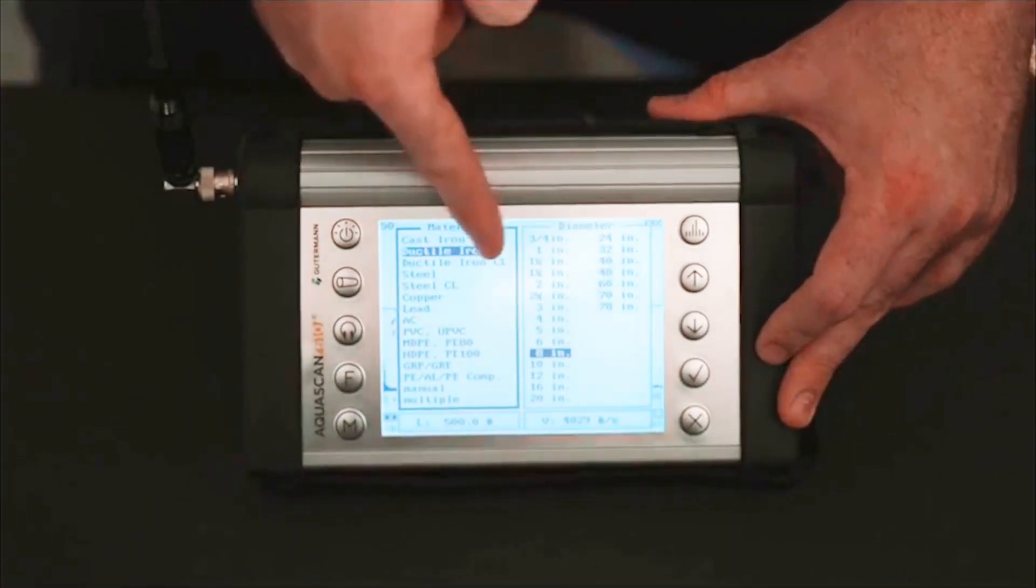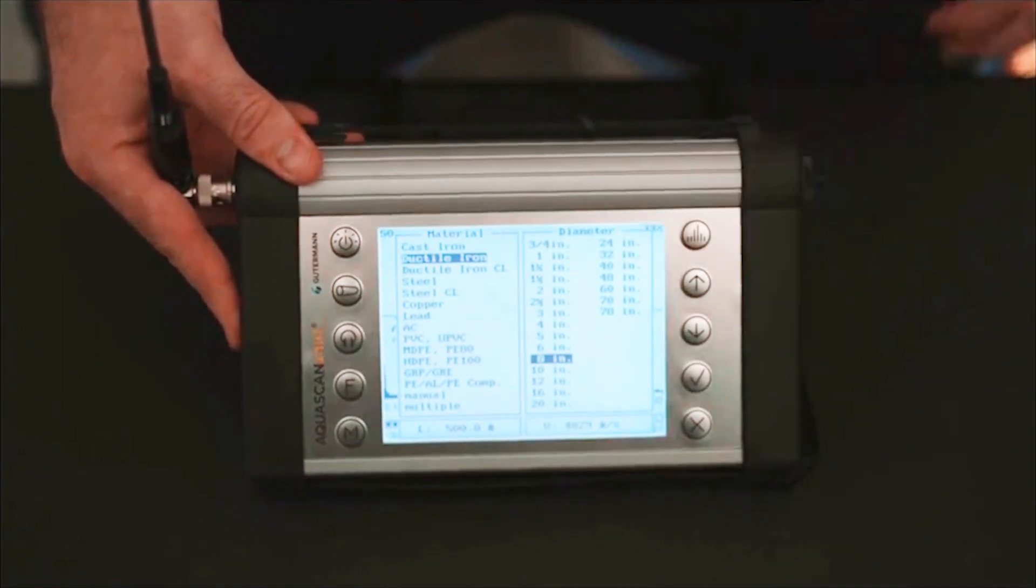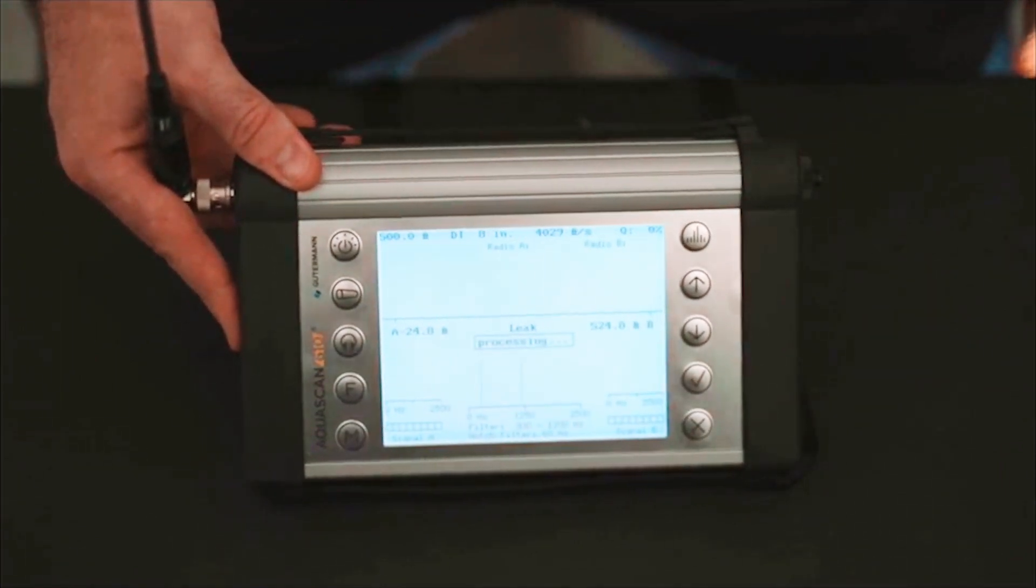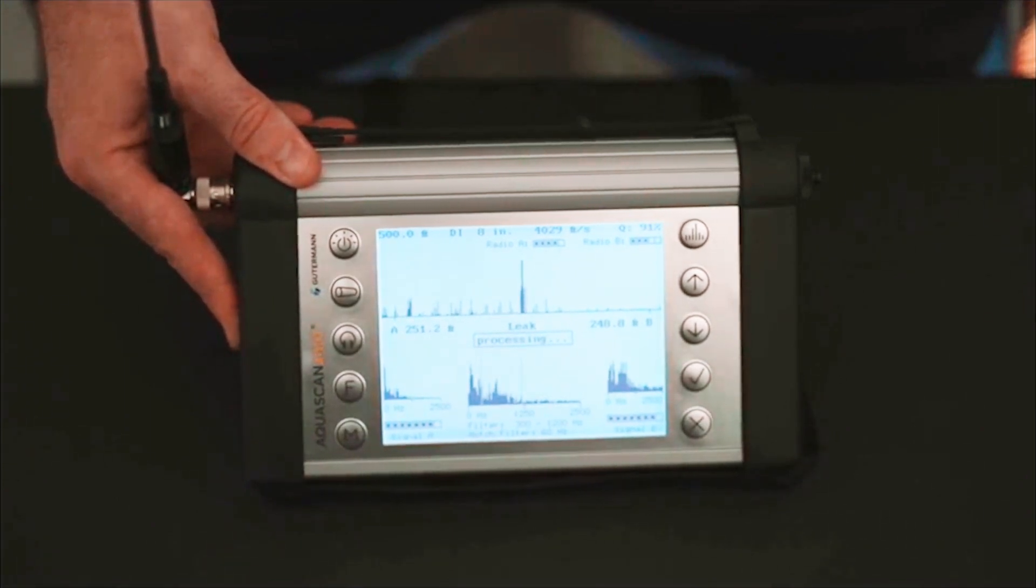You are now ready to start the correlation. Press the correlation button and the processor will begin correlation. The AquaScan 610's display gives you numerous points of data that allow the user to determine if they have identified and pinpointed a leak.